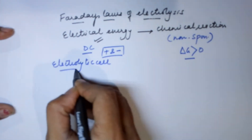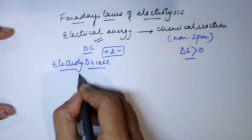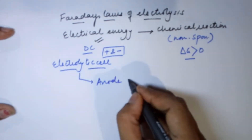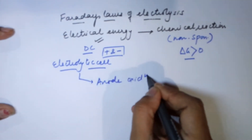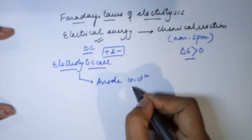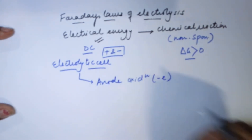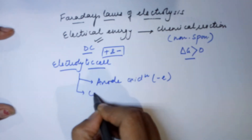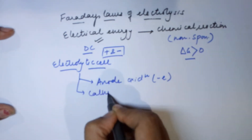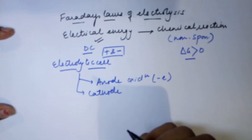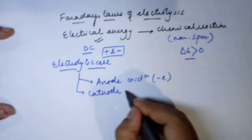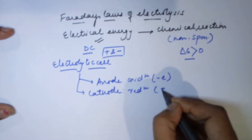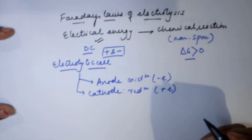In an electrolytic cell, you have the anode, where by default oxidation always happens. Oxidation is loss of electrons. Whereas you have the cathode — the other electrode — where reduction always happens, which is gain of electrons.